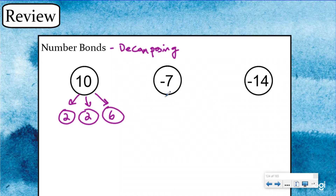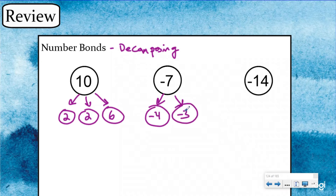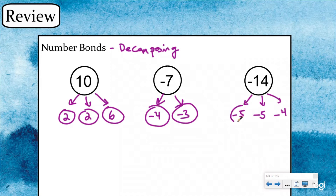You can also decompose negative numbers. So for negative seven, you could do negative four and then negative three. These two parts, when you add them together, give you the whole of negative seven. Negative 14, you could do lots of different ways — you could do negative five, negative five, and then negative four. Draw the arrows and the circles. It's going to be important that you have the skill of decomposing positive and negative numbers.